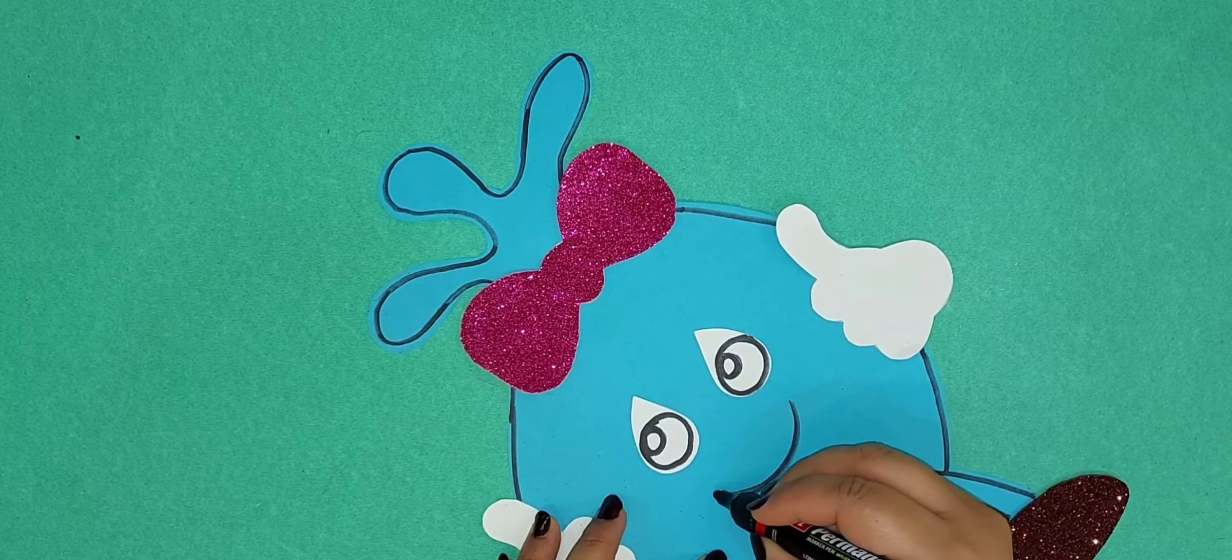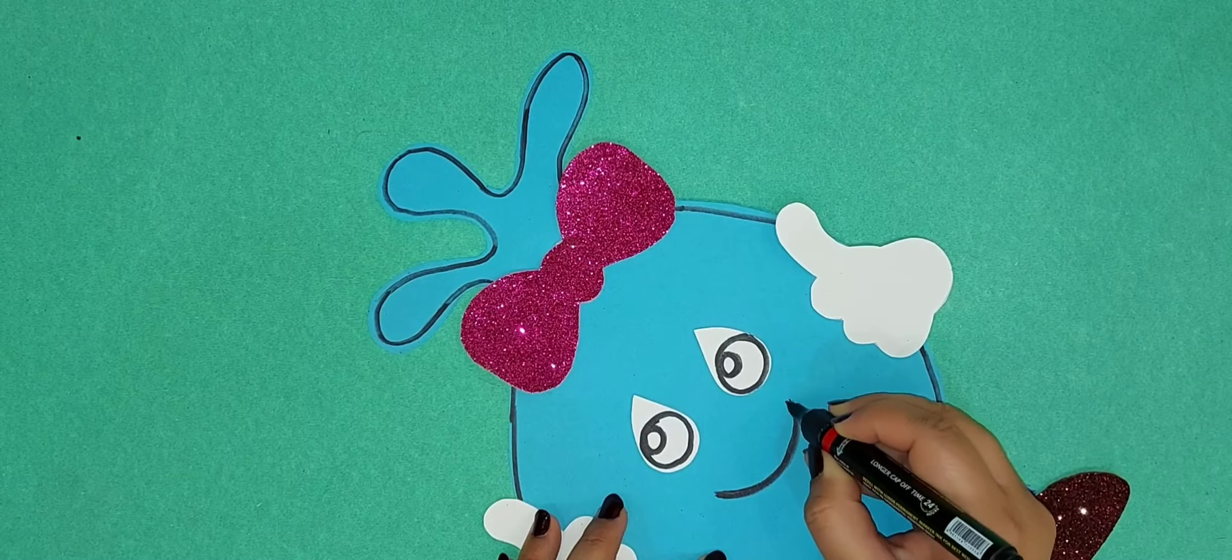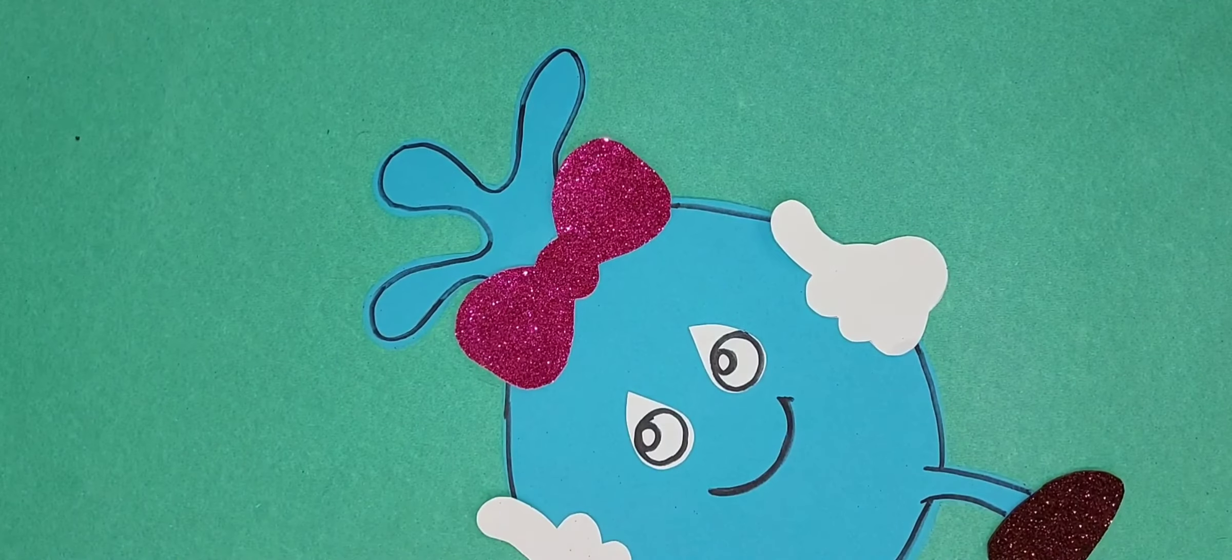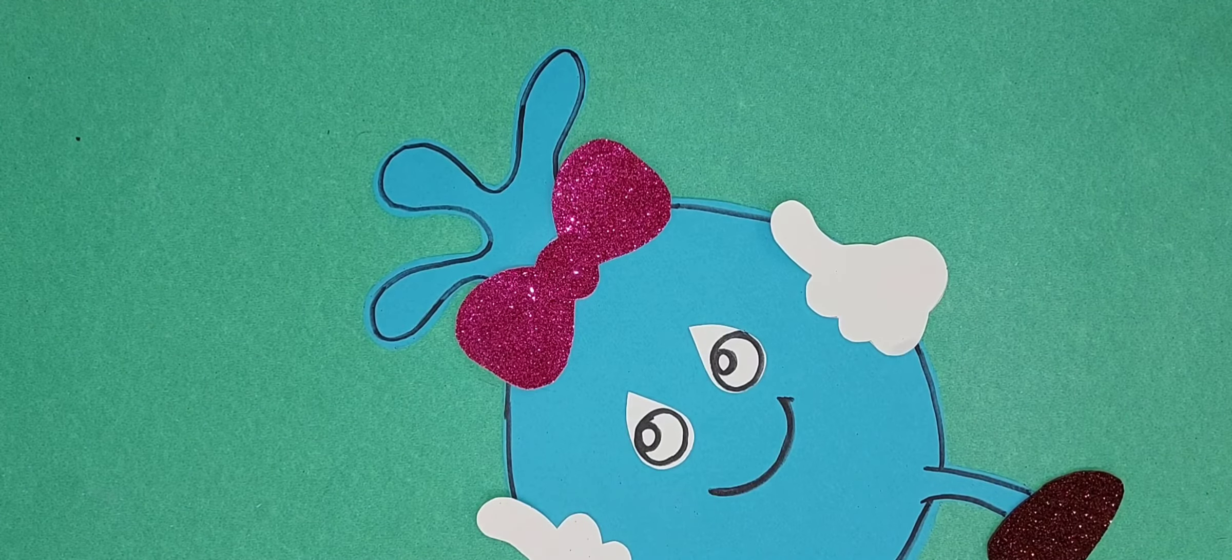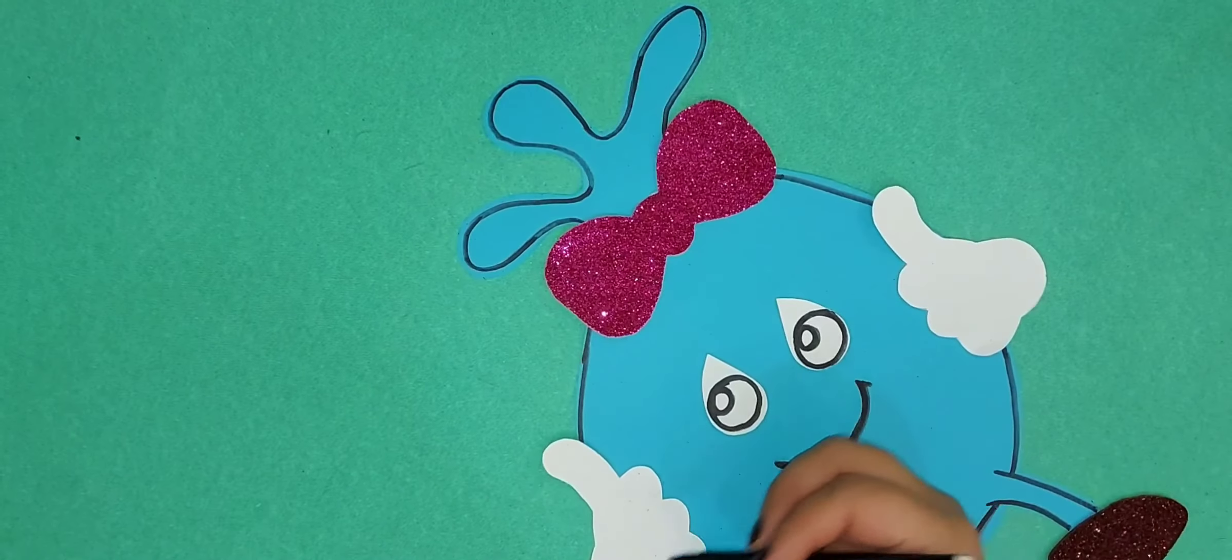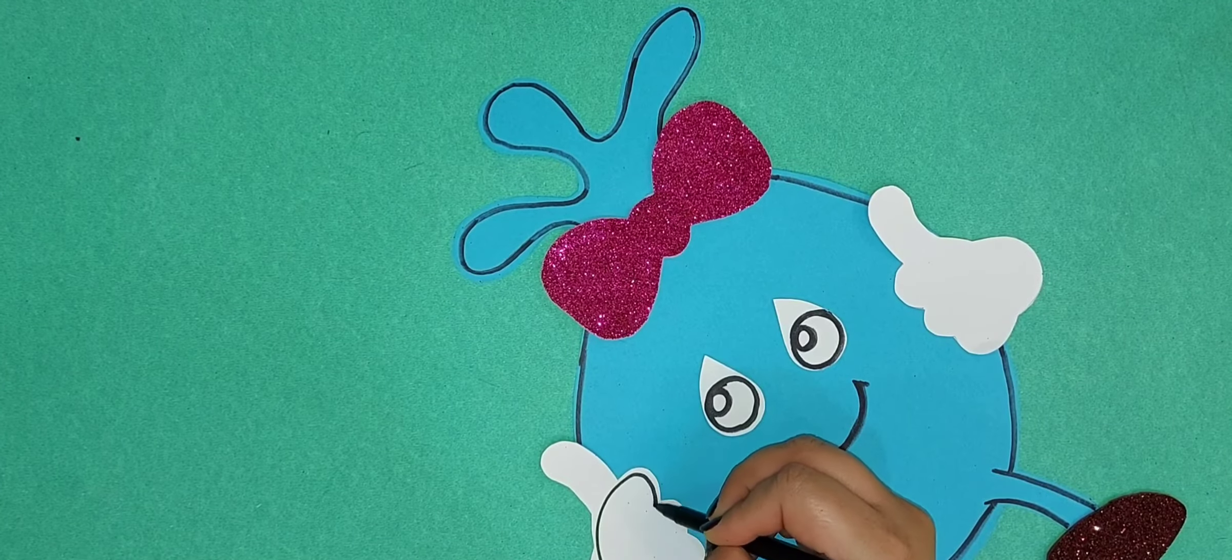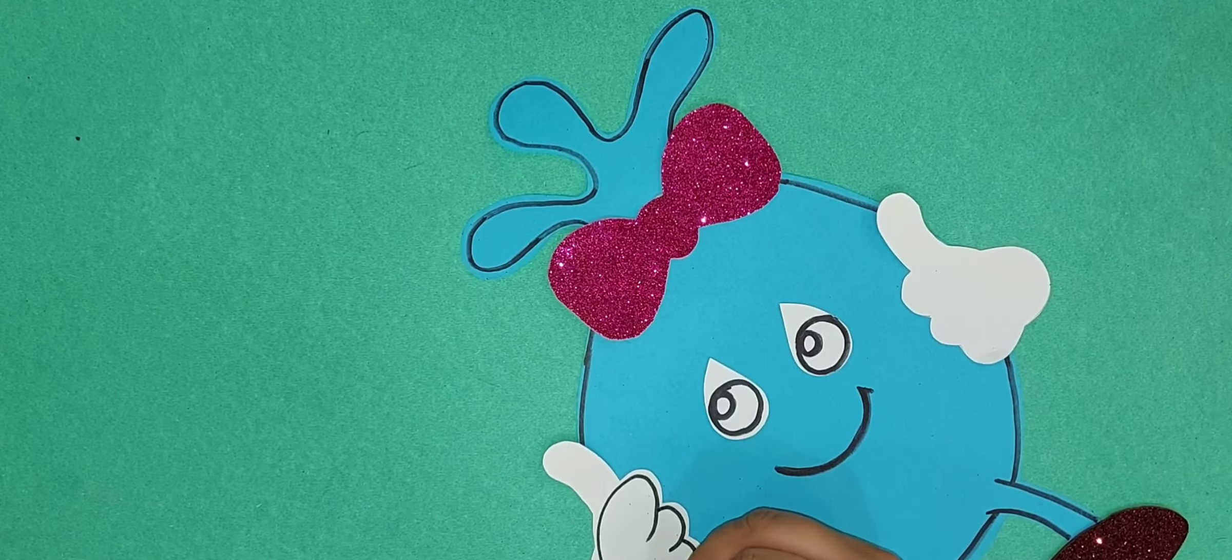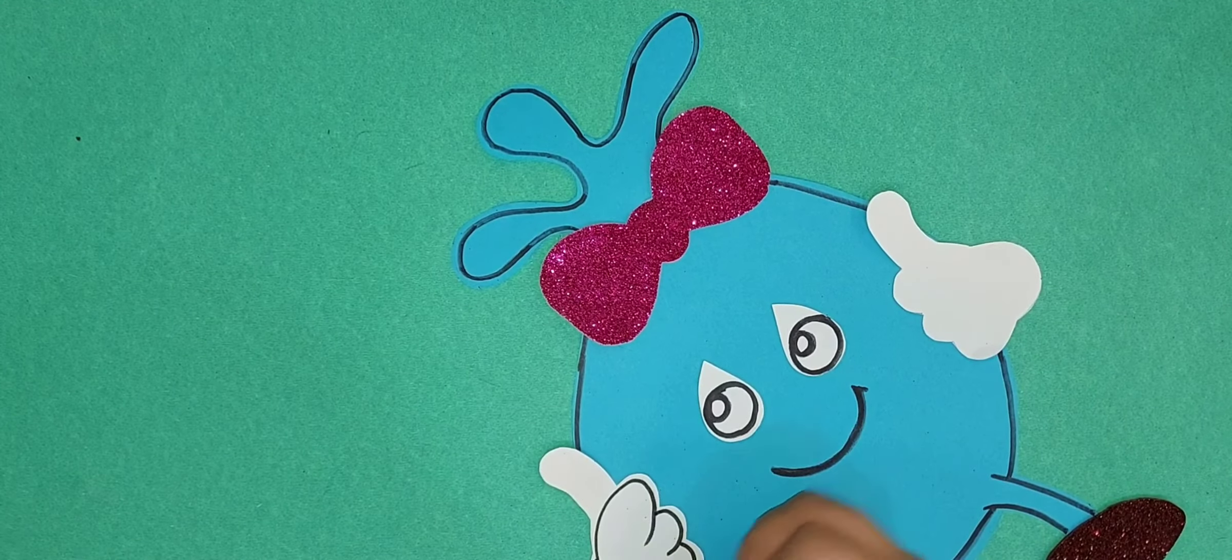And make a mouth, a big smile on the raindrop. Now using a little thinner black marker, we will make the outline of the hands.